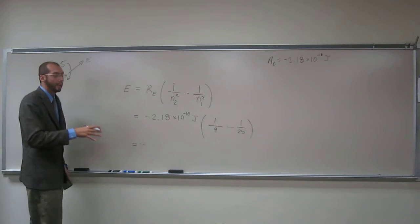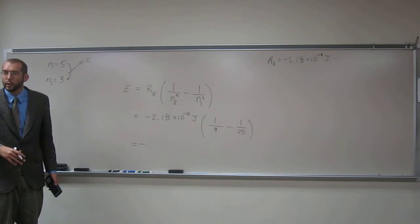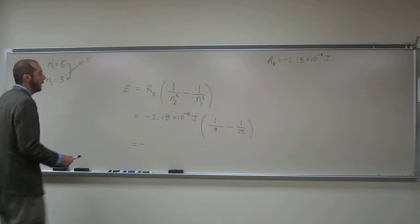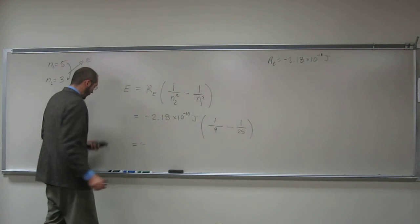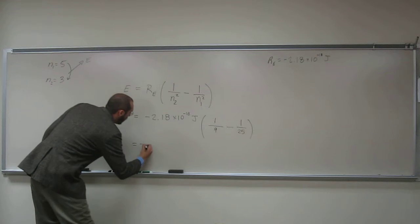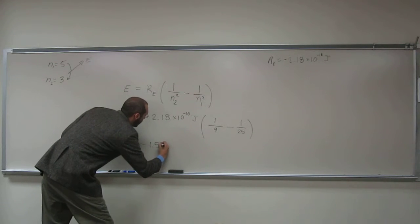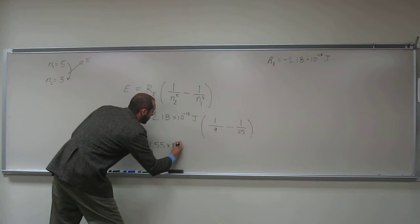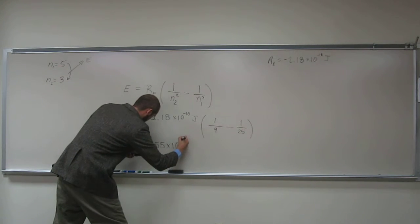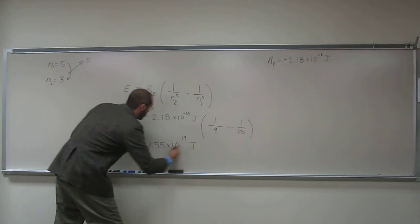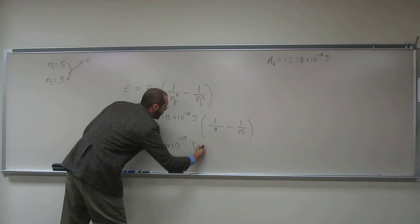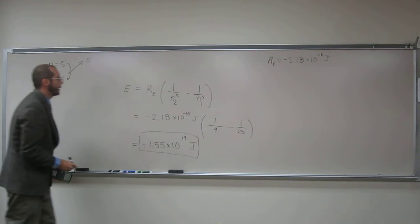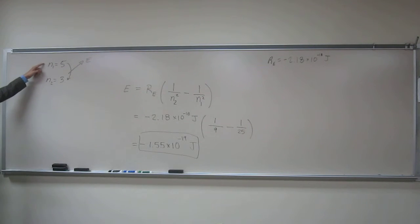So again, this is the energy of one photon, so you would expect this to be a tiny number. Not to mention that you've already got a small number there. I got negative 1.55 times 10 to the negative 19 joules. So that's how much energy it takes to make this transition from energy level 5 to energy level 3. Does that make sense?